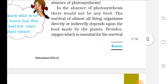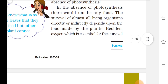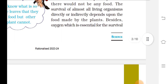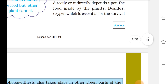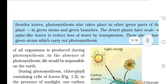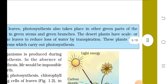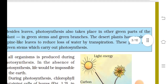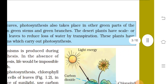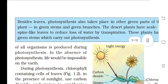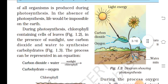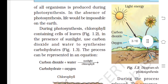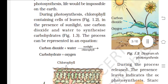In the absence of photosynthesis, there would be no food. The survival of almost all living organisms directly or indirectly depends upon the food made by plants, besides oxygen which is essential for survival. Photosynthesis also takes place in other green parts of the plant — in green stems and green branches. Desert plants have scale-like or spine-like leaves to reduce loss of water by transpiration, so these plants have green stems which carry out photosynthesis. Oxygen for all organisms is produced during photosynthesis, and without it life would be impossible on earth.